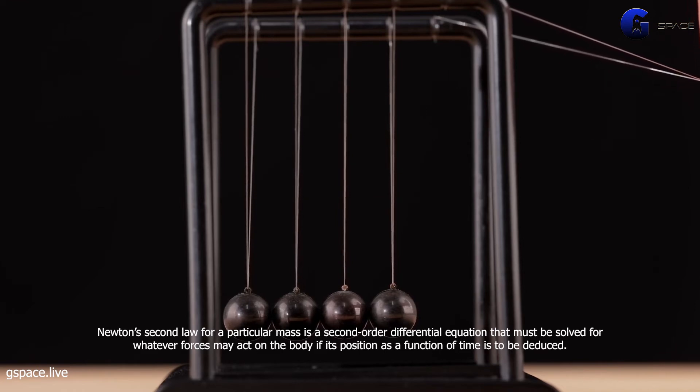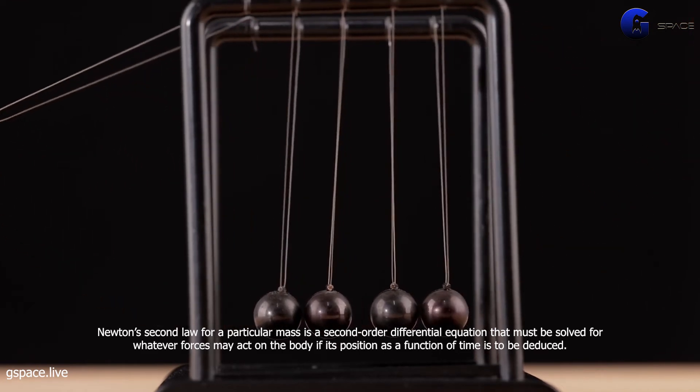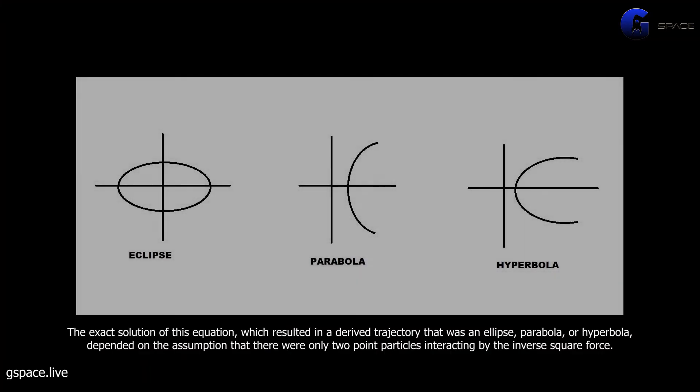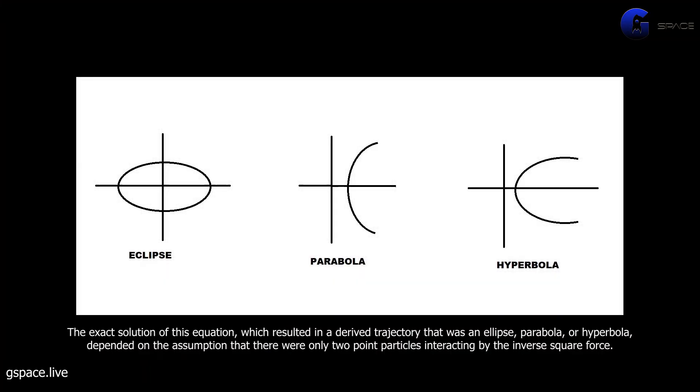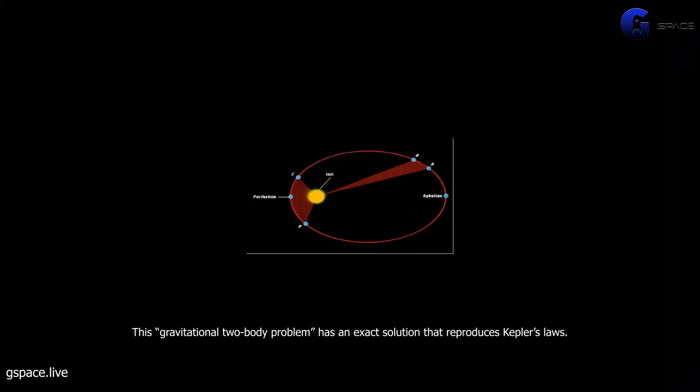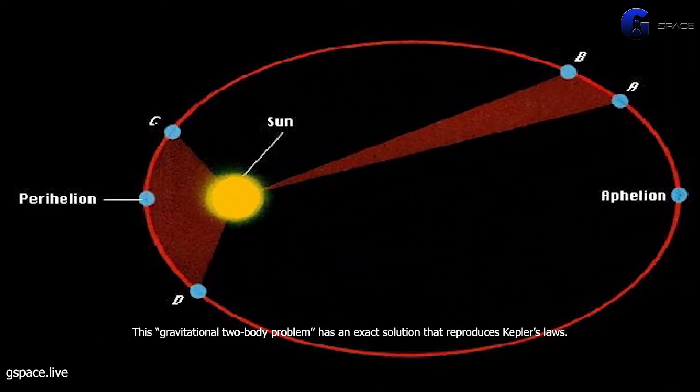The exact solution of this equation, which resulted in a derived trajectory that was an ellipse, parabola, or hyperbola, depended on the assumption that there were only two point particles interacting by the inverse square force. This gravitational two-body problem has an exact solution that reproduces Kepler's laws.